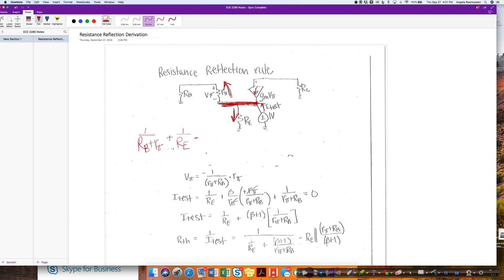The current through here is a minus I test because it's coming in. And then I have a minus from this current here. So I get a minus gm vpi equals 0. So there's my current summation.